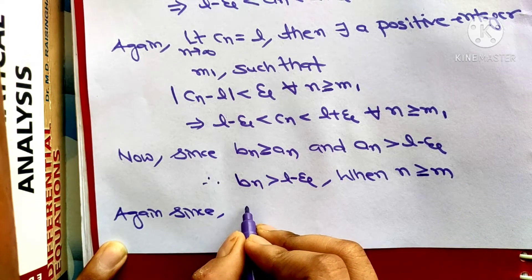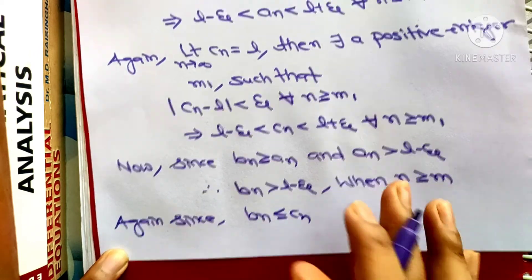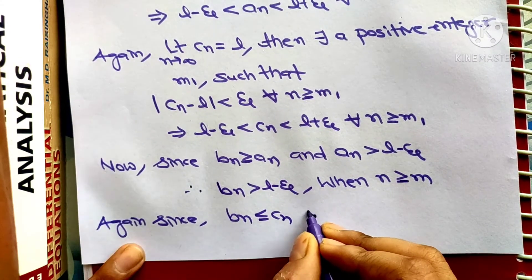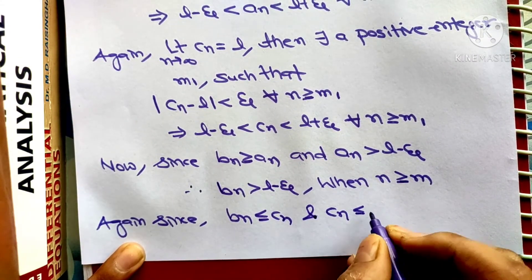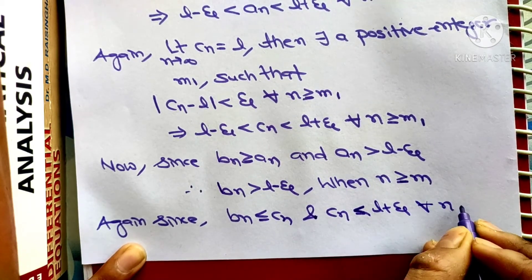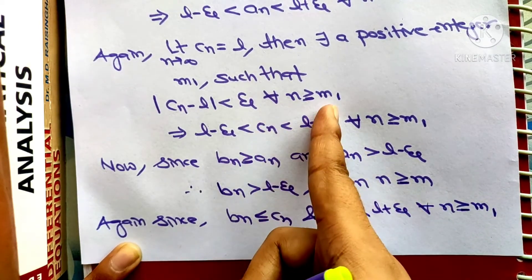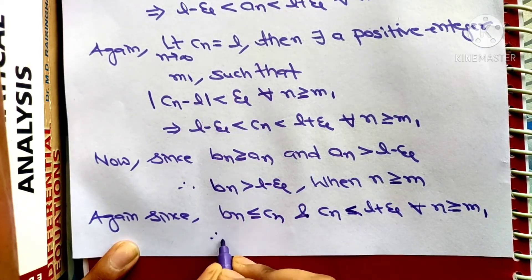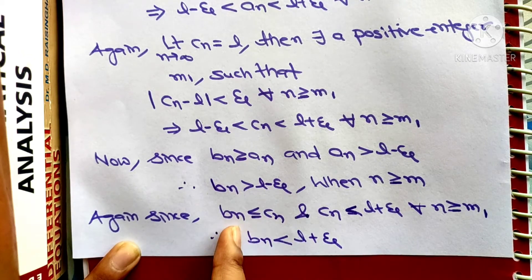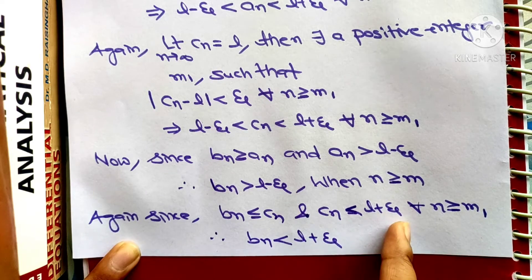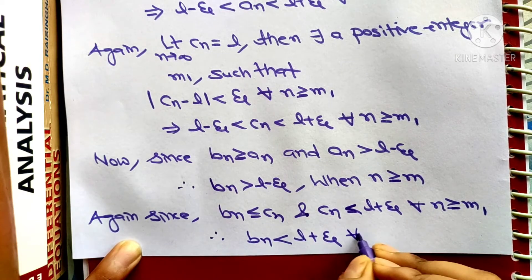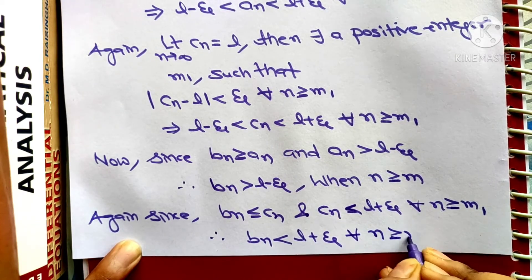Again, since bₙ ≤ cₙ from the hypothesis, and cₙ < l + ε for all n ≥ m₁, it follows that bₙ < l + ε. Therefore bₙ < l + ε for all n ≥ m₁.